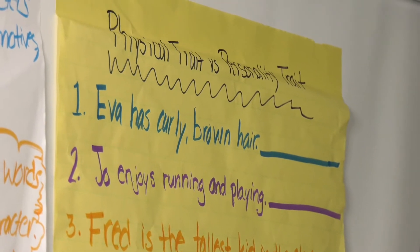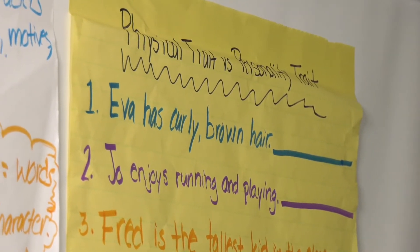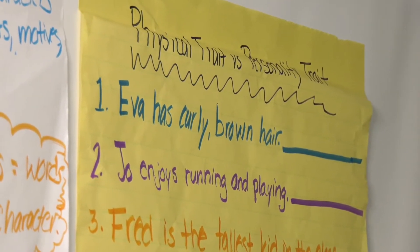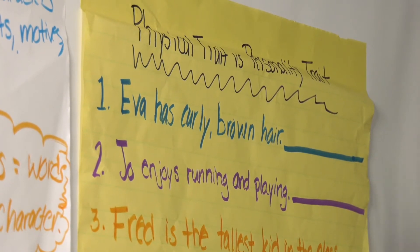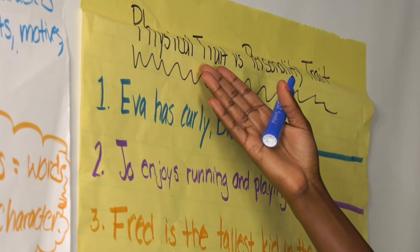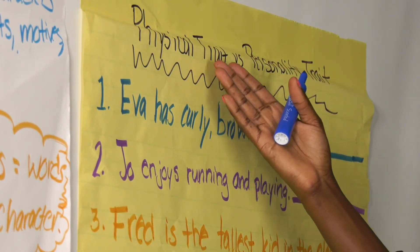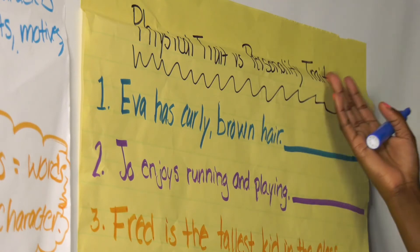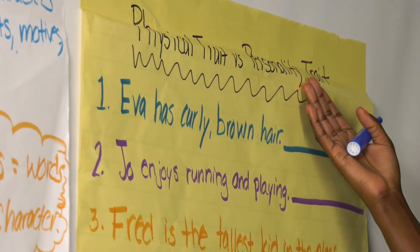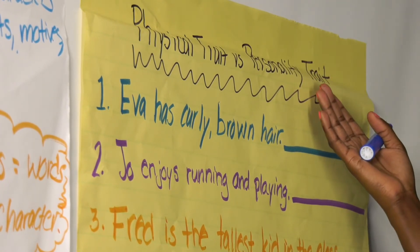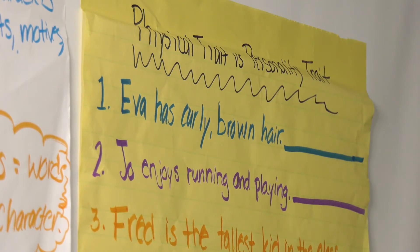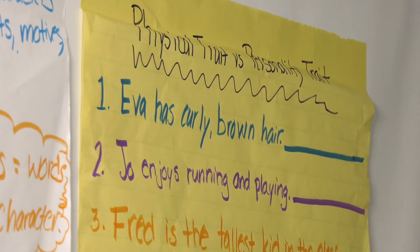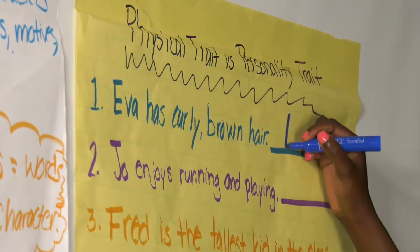Number one: Eva has curly brown hair. Now, would this be a physical trait — something that you can see with your eye? Or would it be a personality trait — something that you can see based on her actions or what she says, something that you cannot see? If you said physical trait, you are correct.